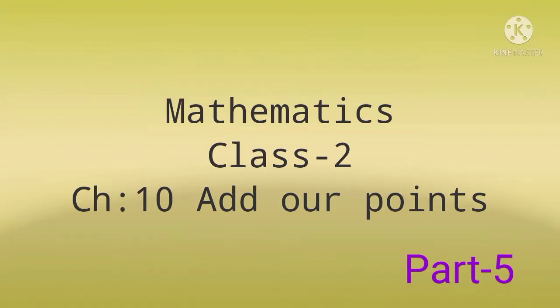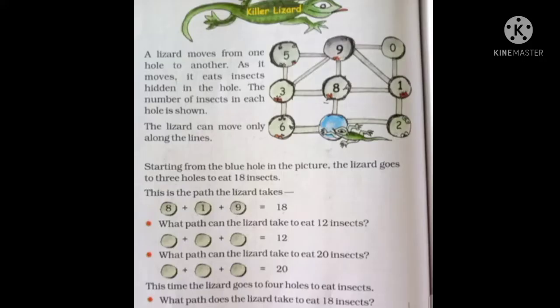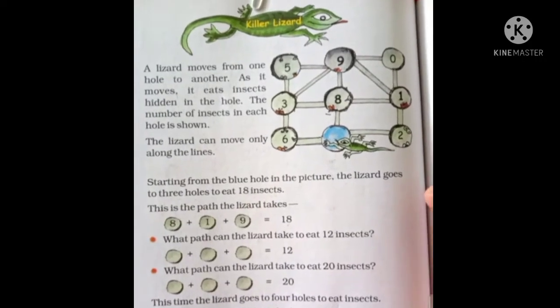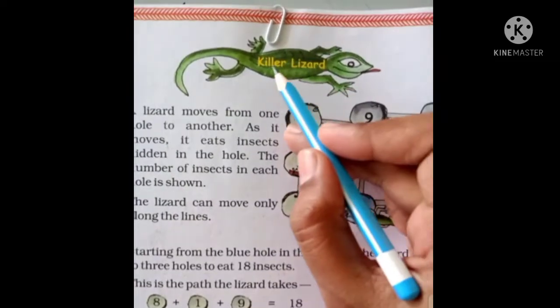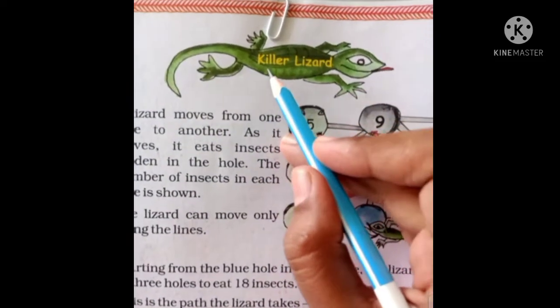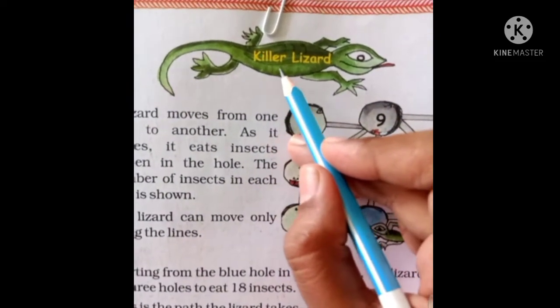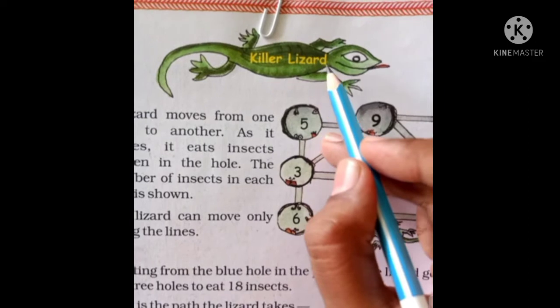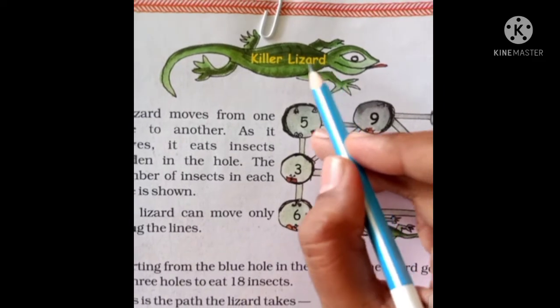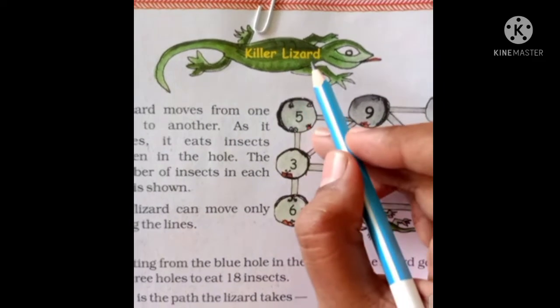Chapter 10, Add Over Points, Part 5. Let's see the further topic of this chapter. Our topic on this page is: K-I-L-L-E-R, Killer. L-I-Z-A-R-D, Lizard. Killer Lizard.